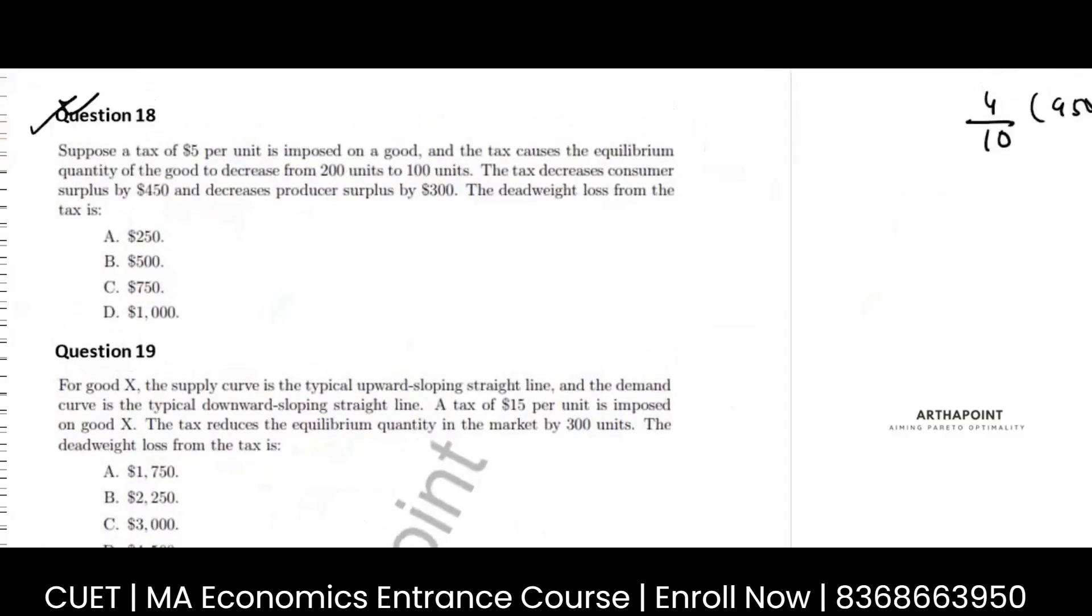Very, very important question. A tax of 5 per unit is imposed and the tax causes equilibrium to decrease. Again, let's just plot this.